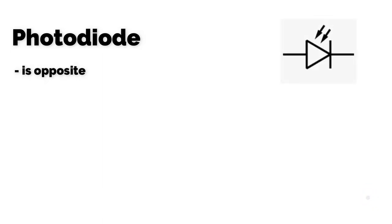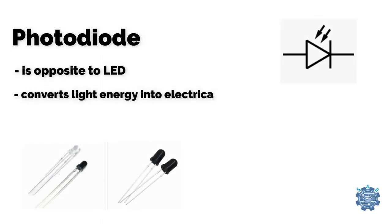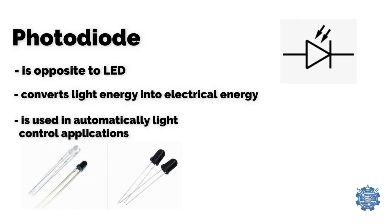Photo diode is a type of diode that is opposite to LED. It converts light energy into electrical energy. Usually it is used in automatic light control applications.